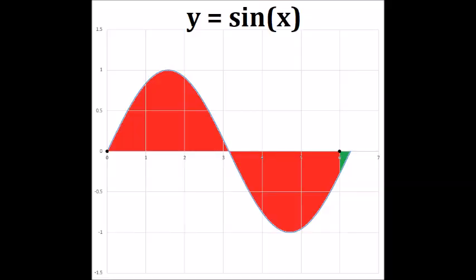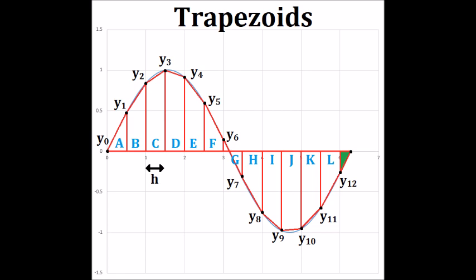If you've been with us for the past few lessons, you'll know that we are exploring different ways to approximate the definite integral of a function. In our example, we want to find the area under the sine curve from x equals 0 to x equals 6. This is shown in red. So far, we have seen that using trapezoidal shaped panels gives us a fairly good estimate of the area.